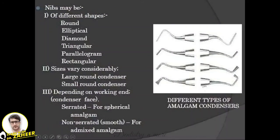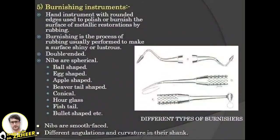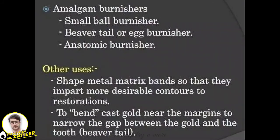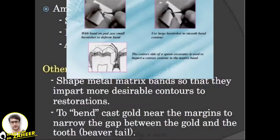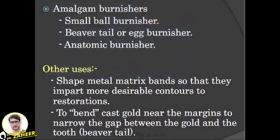Burnishing instruments have rounded edges and are used to polish or burnish the surface of metallic restorations. They come in various types: ball, egg, apple-shaped, conical, and fishtail. Burnishers are used to shape metal matrix bands to impart more desirable contours to the restoration, used for Class 2 amalgam restorations, and also to bend cast gold near the margins to narrow the gap between the gold and the tooth.